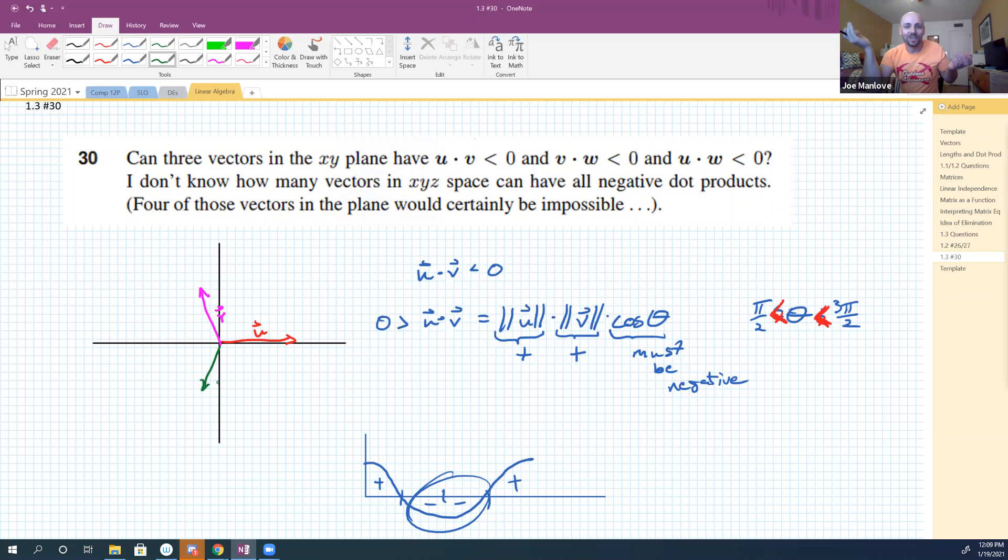You guys see that? Now my question is: is it possible for me to put a vector somewhere in here that has a more than 90 degree angle with v and still has a more than 90 degree angle with u? Yeah, I think so. Seems like I could just do this guy, right? And then they're all mutually obtuse.